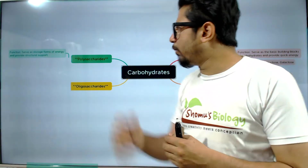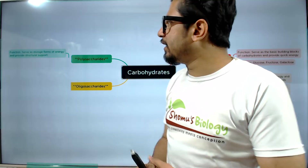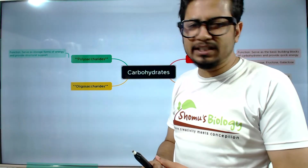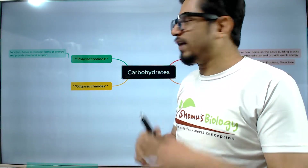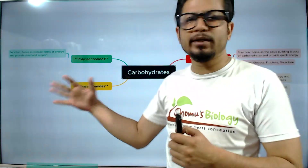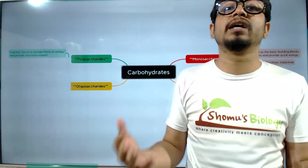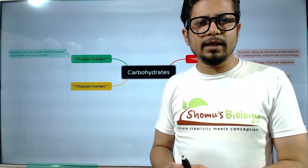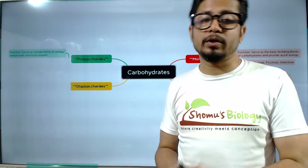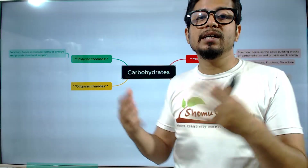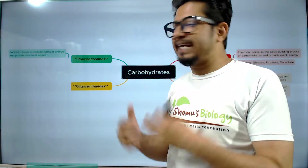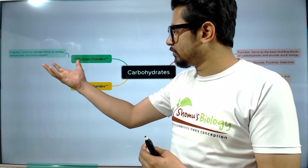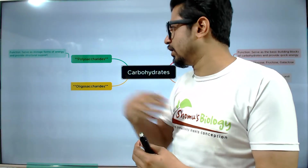Now we will see polysaccharides. The polysaccharide function serves as a storage form of energy or provides structural support. There are polysaccharides which provide structural support and there are polysaccharides which act as storage. For example, glycogen is a polysaccharide that acts as a storage form of energy in our body.